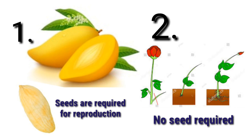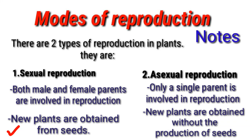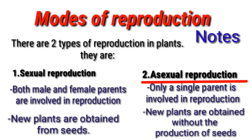In sexual reproduction, new plants are obtained from seeds. For example, mangoes are obtained from seeds, and seeds are obtained from plants. In asexual reproduction, new plants are obtained without the production of seeds. Asexual reproduction involves a single parent and seeds are not required.